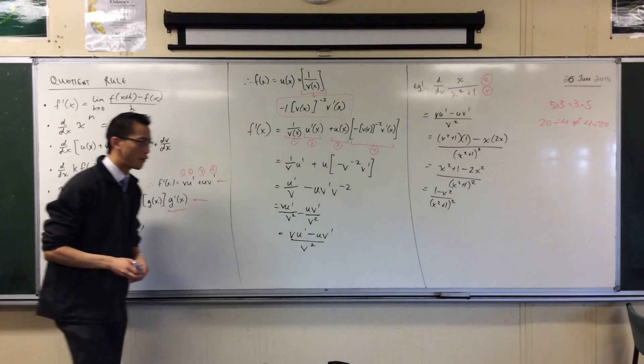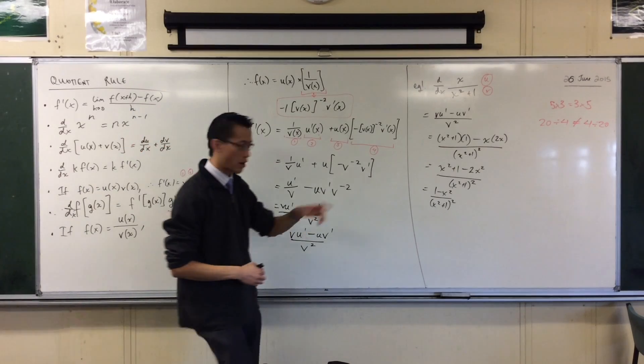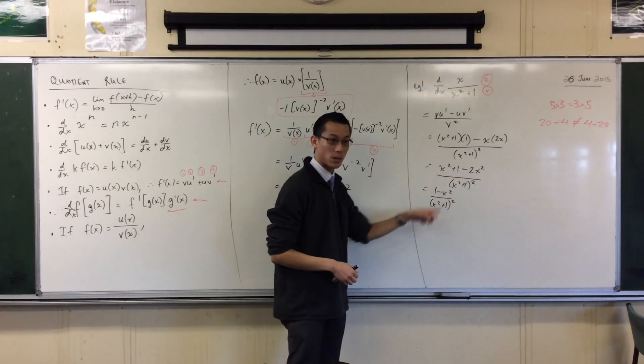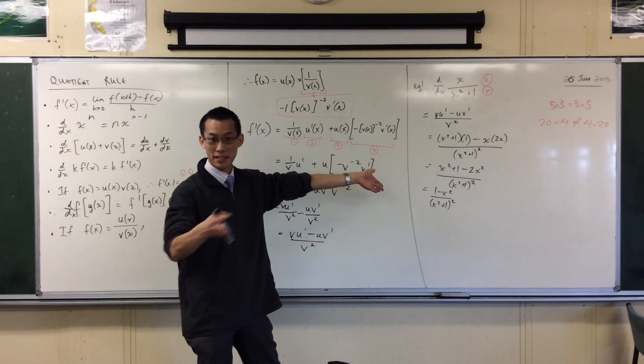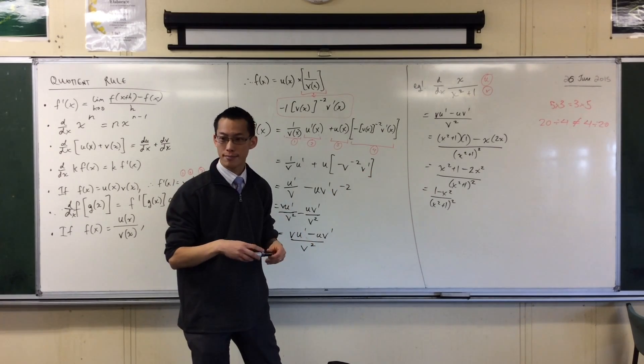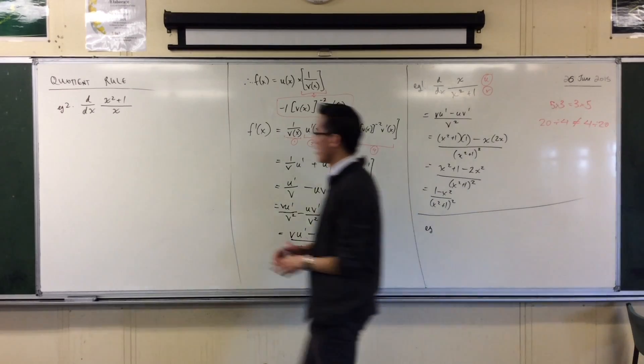Ta-da. I suppose I could factorize the top if I wanted to. In the future, when you're trying to work out where this numerator is equal to 0, it's clearly advantageous to factorize that numerator, make it 1 minus X, 1 plus X. But here I'm finished.